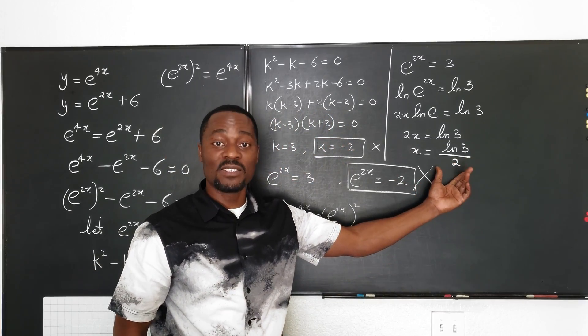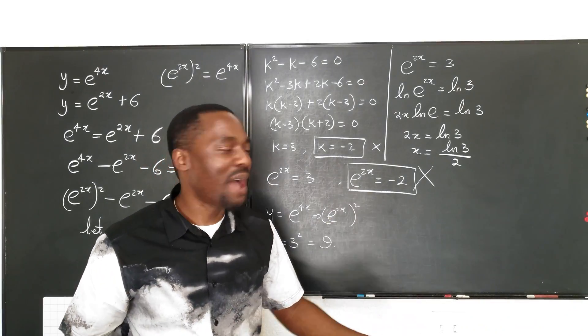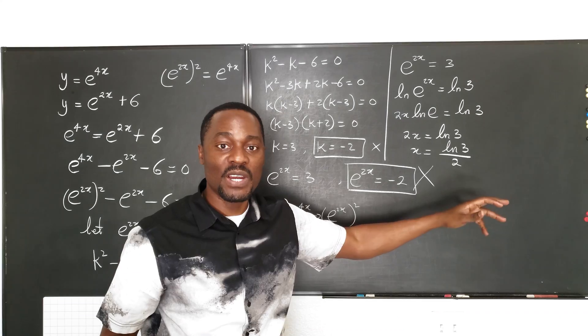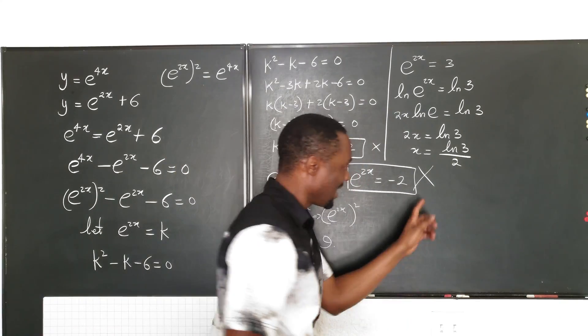You can leave your answer this way, or you can write it as, we could have done this. But whatever happens, we're still good. x is half of the natural log of 3, or the natural log of the square root of 3. That's another way we can write this.